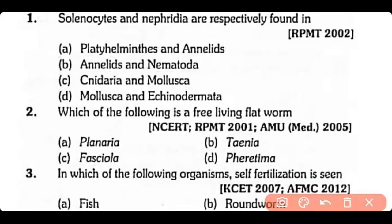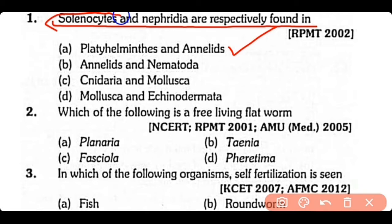Question no.1. Flame cells and nephridia are respectively found in Platyhelminthes and annelids. This is the correct answer. Flame cells are the excretory structures of Platyhelminthes, while nephridia are the excretory structures of annelids.